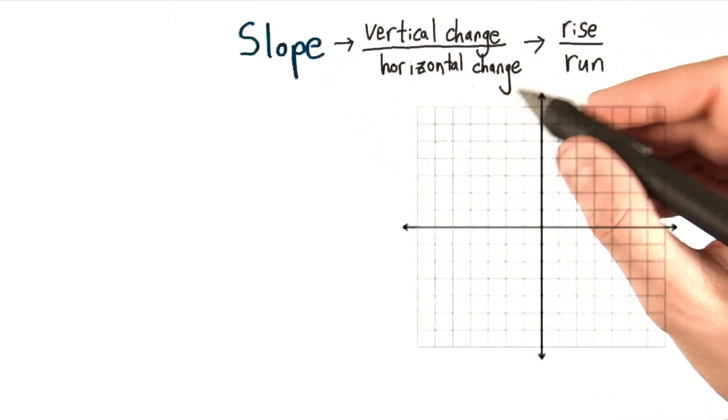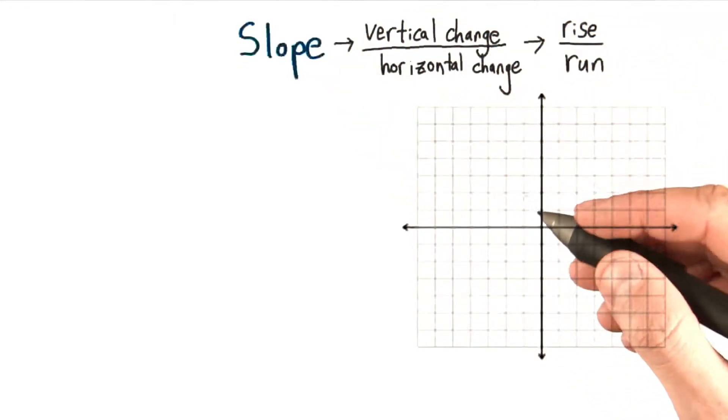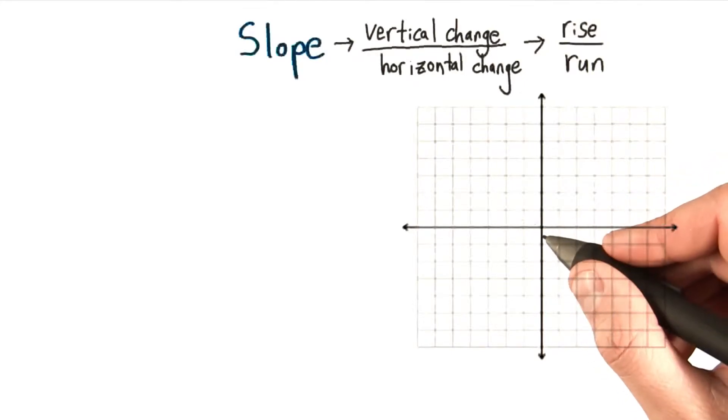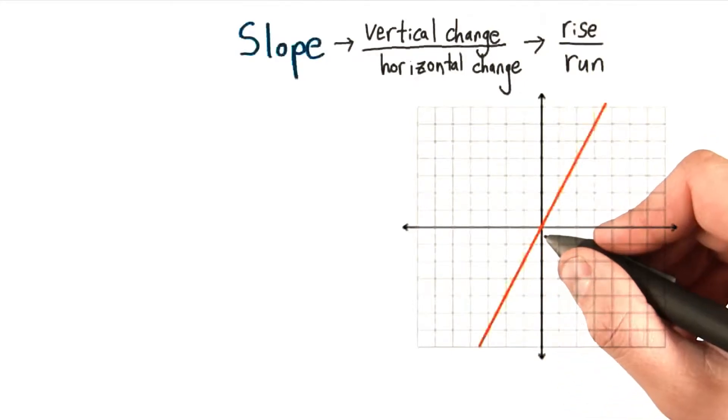This idea of slope doesn't just work with hills and staircases. It works with mathematical graphs as well. Lines have a slope just like hills and stairs do. Take this line for example.